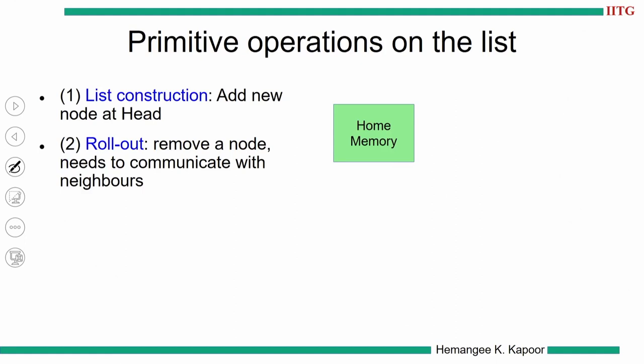Understanding the primitive operations on the list: list construction is the simplest. We add a new node at the head. A request comes from a quad wanting to read a data block, it accesses the home node, and home creates the first node as the head, pointing to null. If a new node wants to join, it comes to home, home makes it the new head, and this new node connects to the previous head. From this philosophy, if home points to yellow, then pink, then green — it means green was the first requester, then pink, then yellow, as the newest requester always becomes the head.